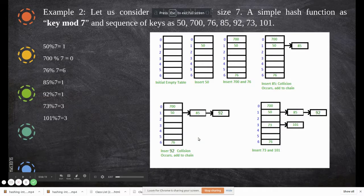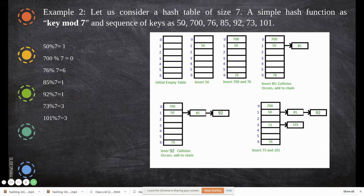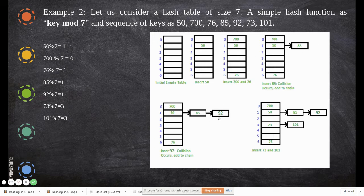Let us consider a hash table of size 7, with a simple hash function key mod 7, and the sequence of keys: 50, 70, 76, 85, 92, 73, 10. 50 mod 7 generates 1, so 50 is stored at index 1. 70 mod 7 is 0, stored there. 76 mod 7 is 6, so 76 is stored at index 6. 85 mod 7 is 1 again, so it is connected to the chain at index 1. 92 mod 7 is also 1, connected likewise. 73 mod 7 is 3, stored at index 3. 10 mod 7 is 3 again, so it connects to the chain at index 3.